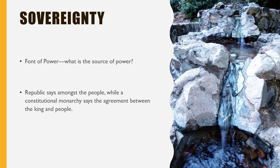In a federal system, the power comes from the people, but the people are citizens of their state. In the US, we often refer to them as residents, because the way you become a citizen of a state is you're a US citizen who resides in a state. There's also the citizenry of the United States. So in a republic, power comes from the people, but in a federal republic, power flows from the people to the state and separately from the people to the national government.